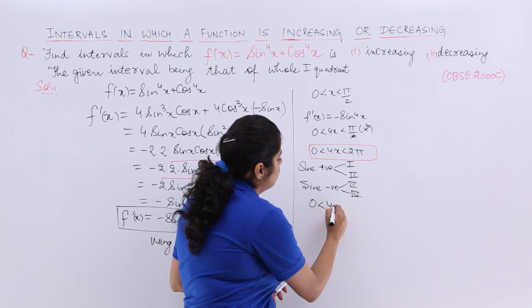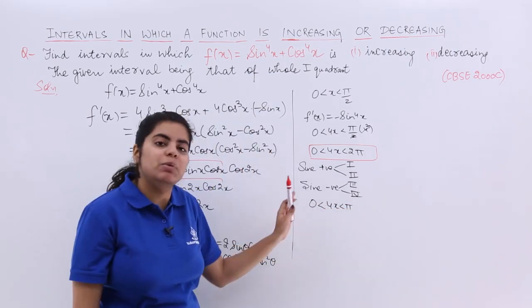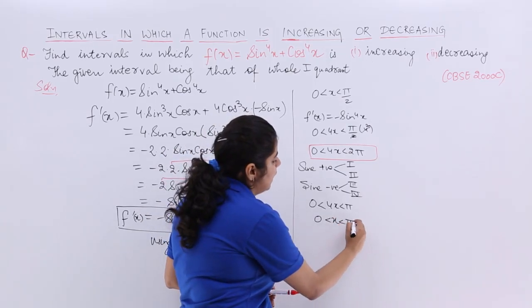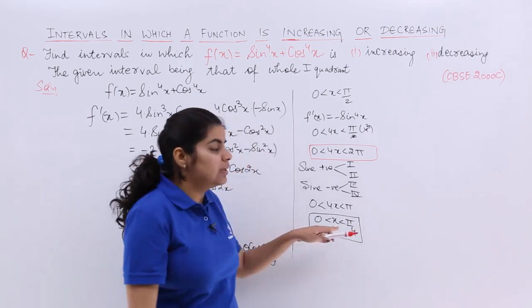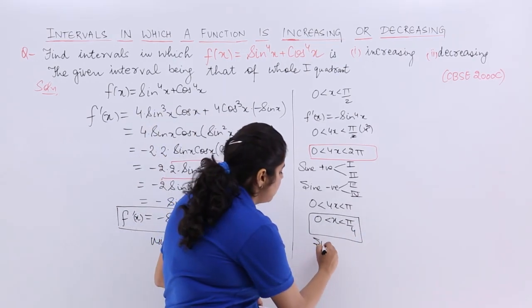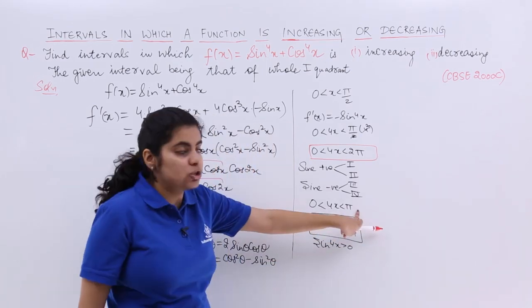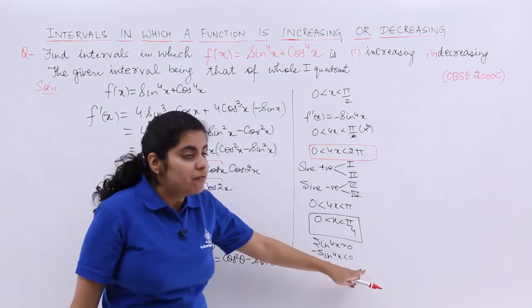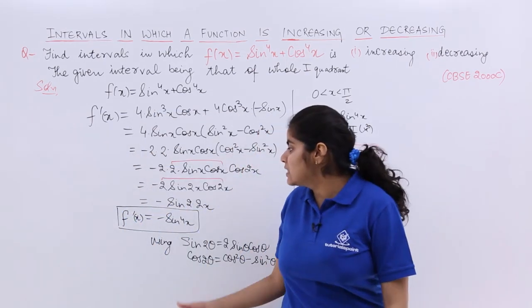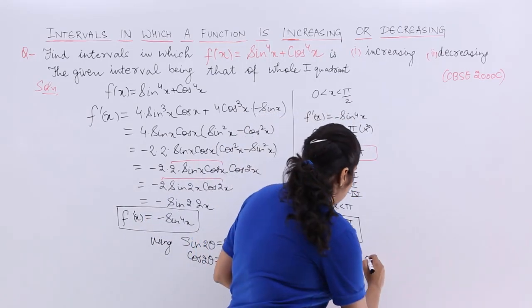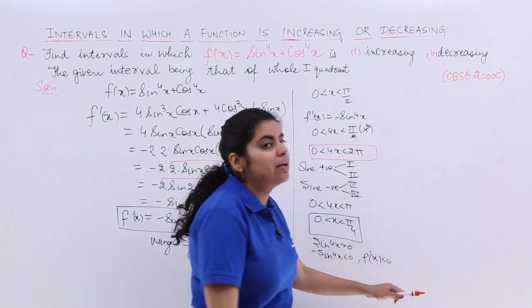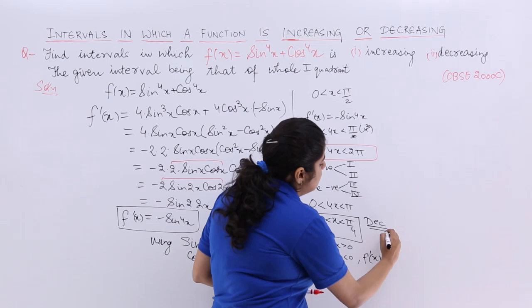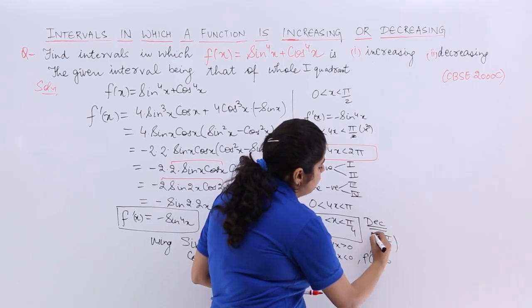When 4x lies between 0 to π, my x would be 0 to π/4. This is the interval 0 to π/4 wherein I have sin(4x) > 0. My -sin(4x) < 0. When -sin(4x) < 0, that means f'(x) < 0. When f'(x) < 0, it's a decreasing function. So the interval in which the function is decreasing is 0 to π/4.